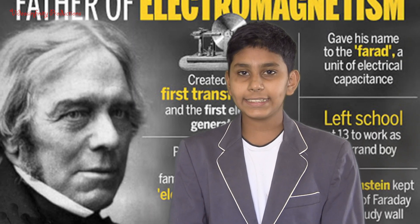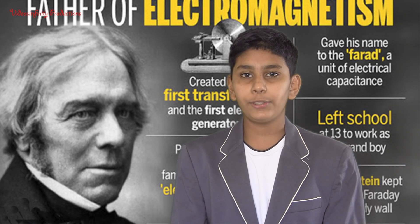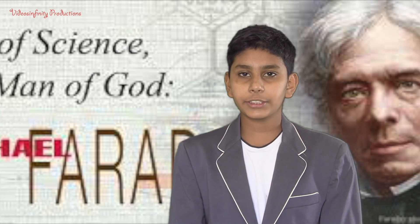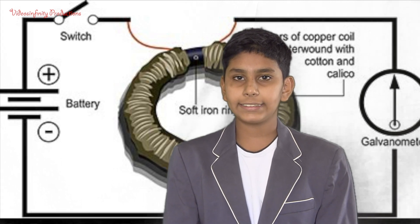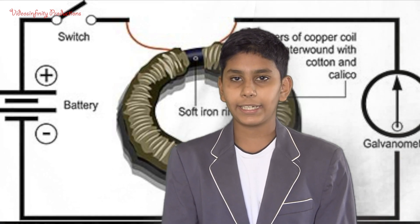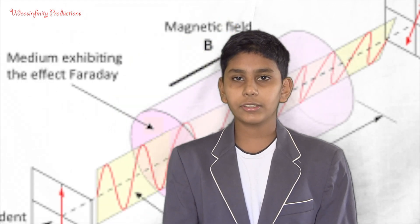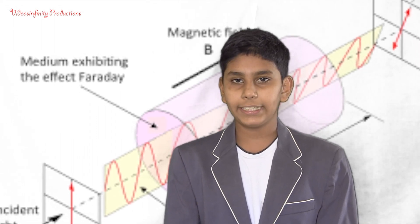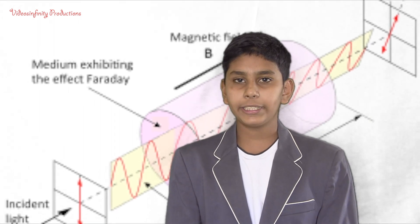Although he received very little formal education, he became one of the most influential scientists in the world. This was through his research on magnetic fields and a conductor carrying direct current. He established the basic concept of electromagnetism in physics. He also established that rays of light could be affected by magnetism and that there was an underlying relationship between the two phenomena.